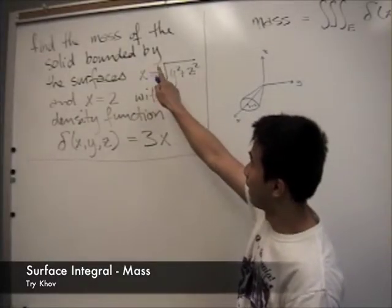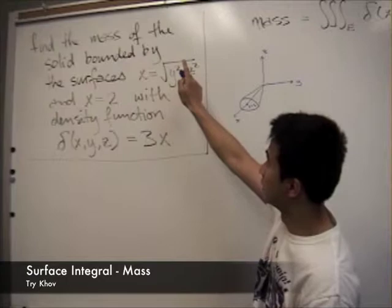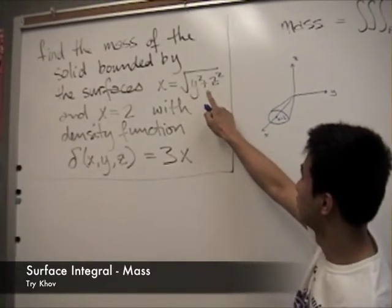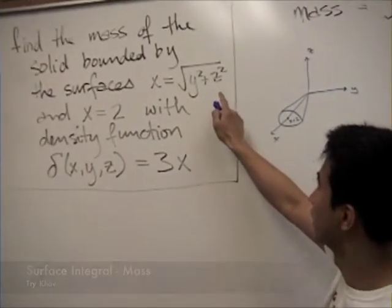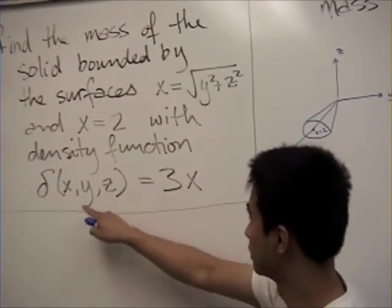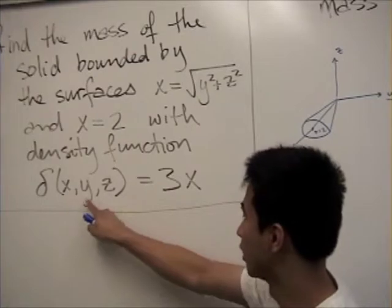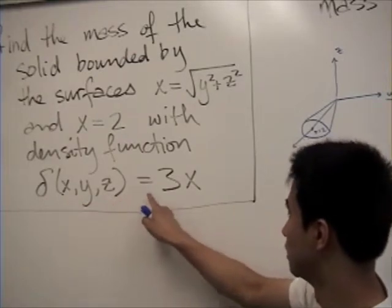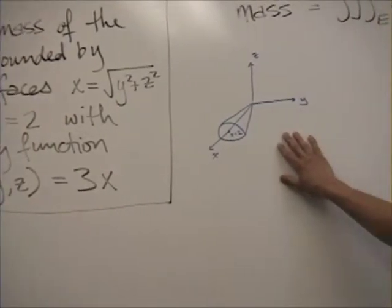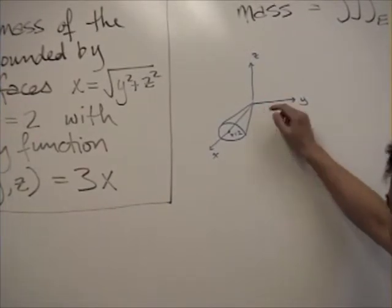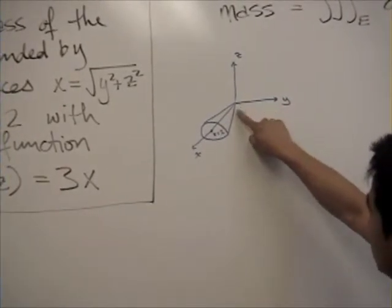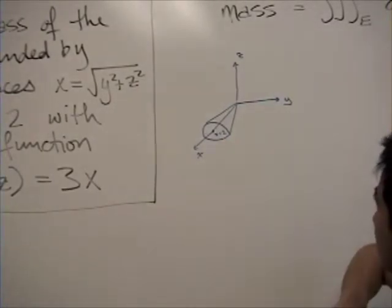Today we're going to find the mass of the solid bounded by the surfaces x equals the square root of y squared plus z squared, and x equals 2, with a density function delta(x, y, z) equal to 3x. I've already drawn out my region — this cone-like shape from 0 to the x equals 2 plane.